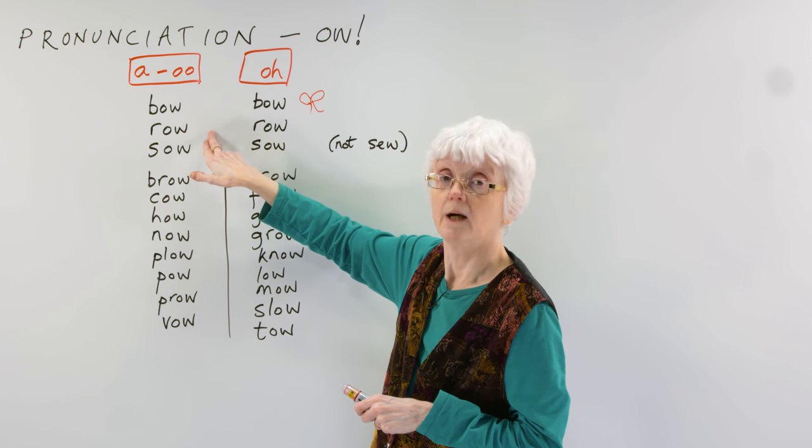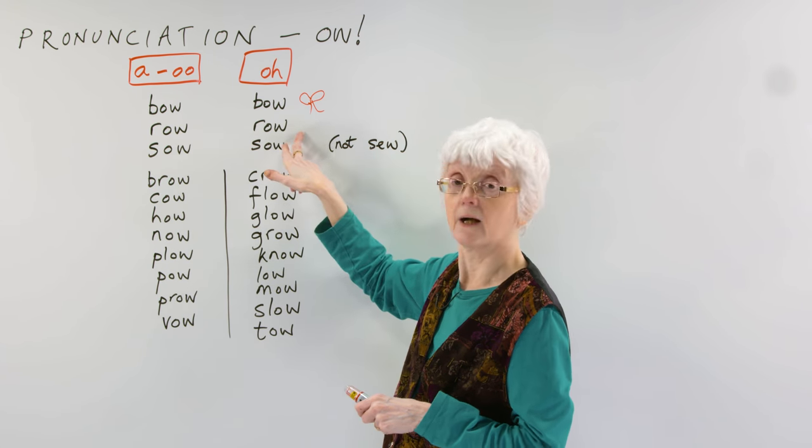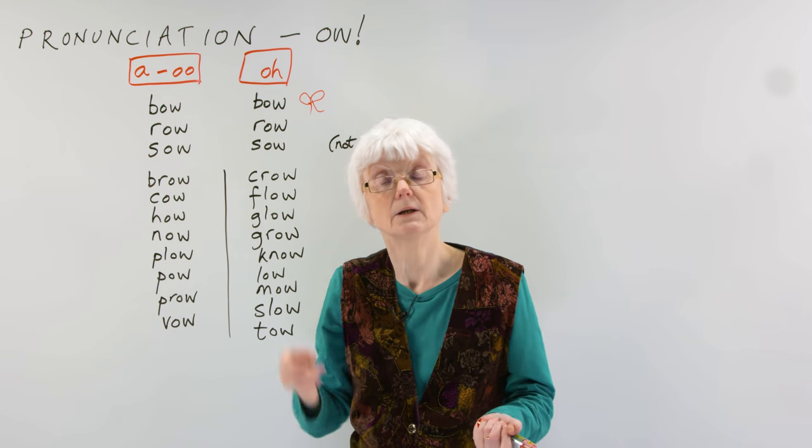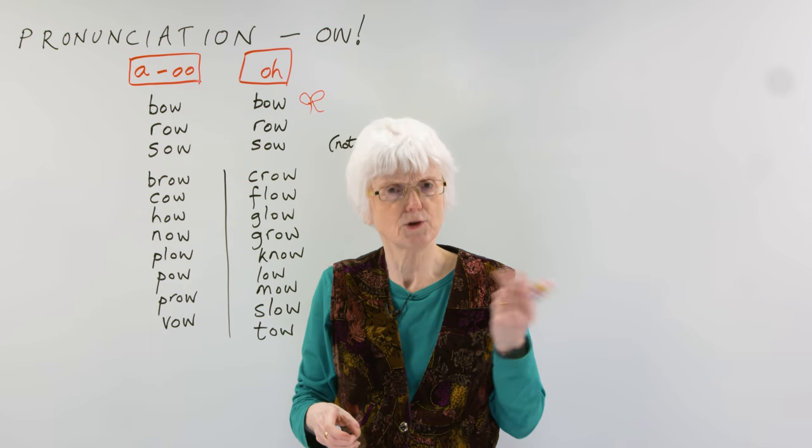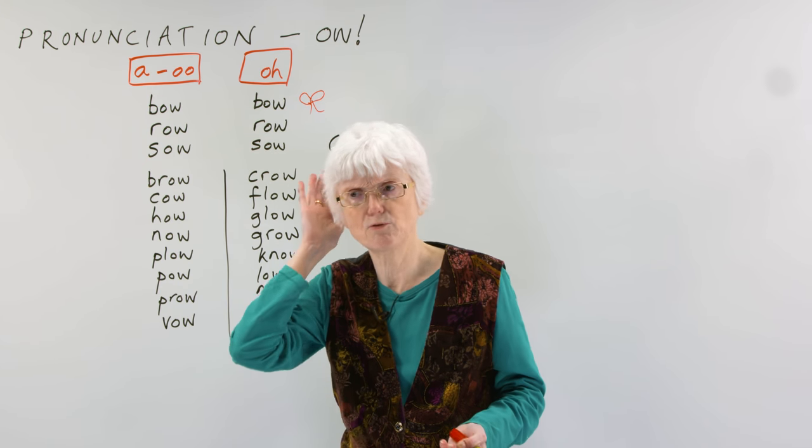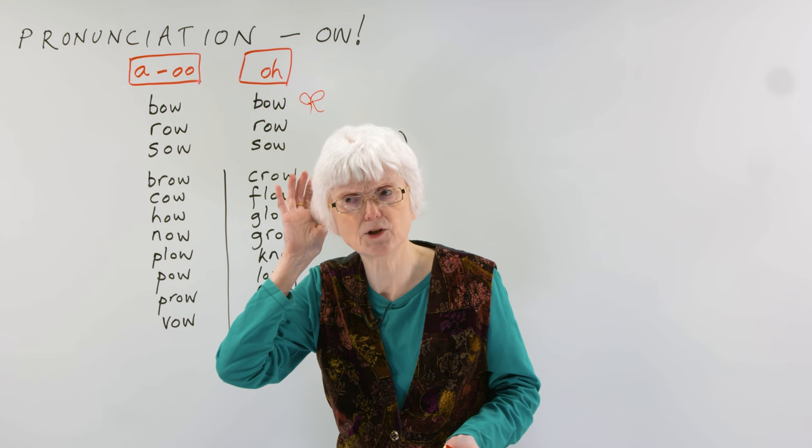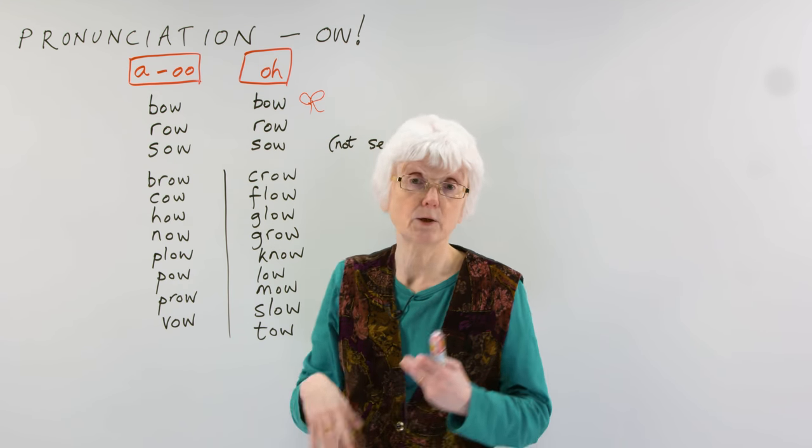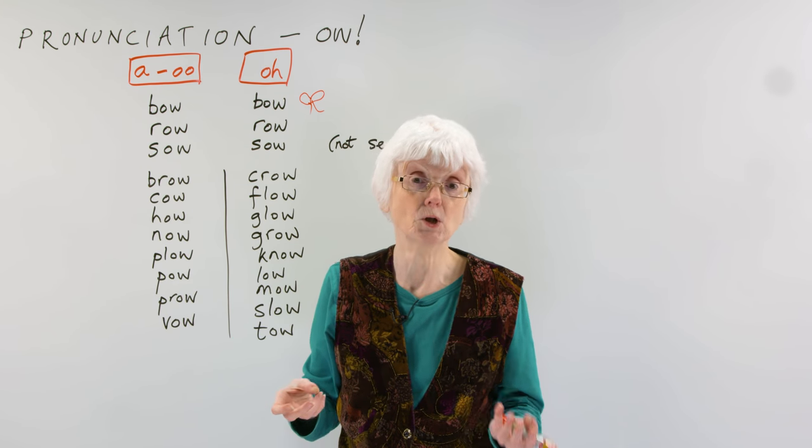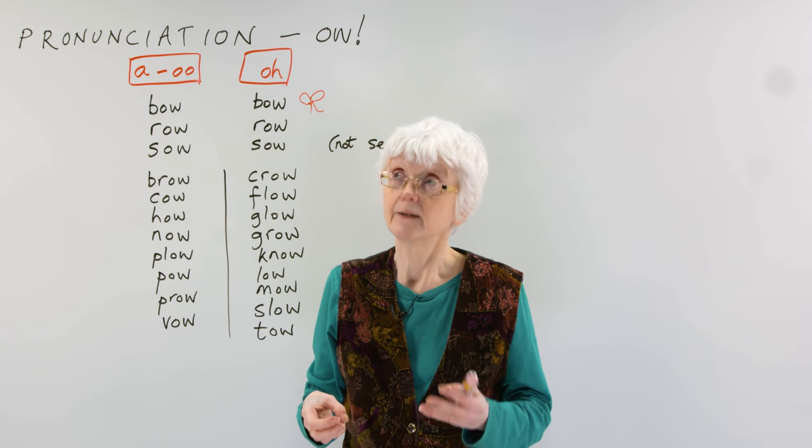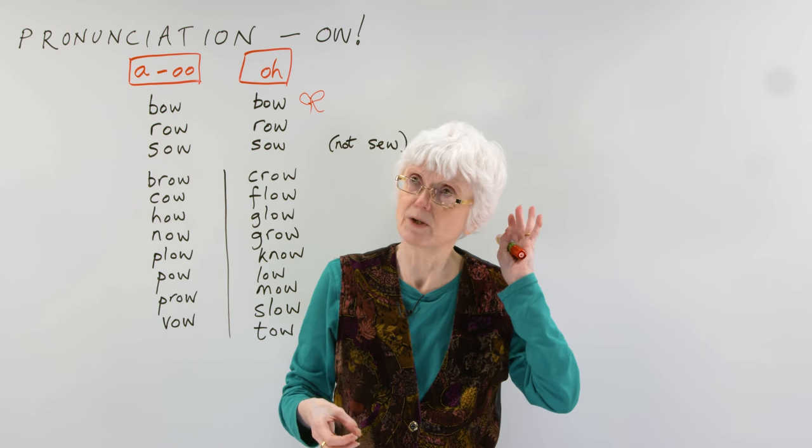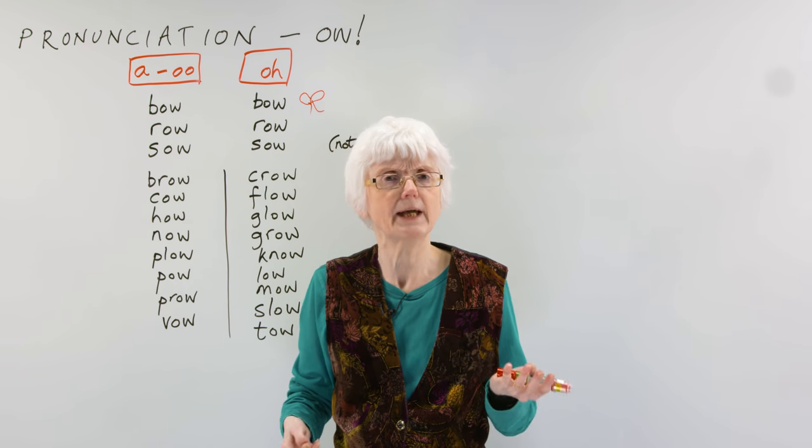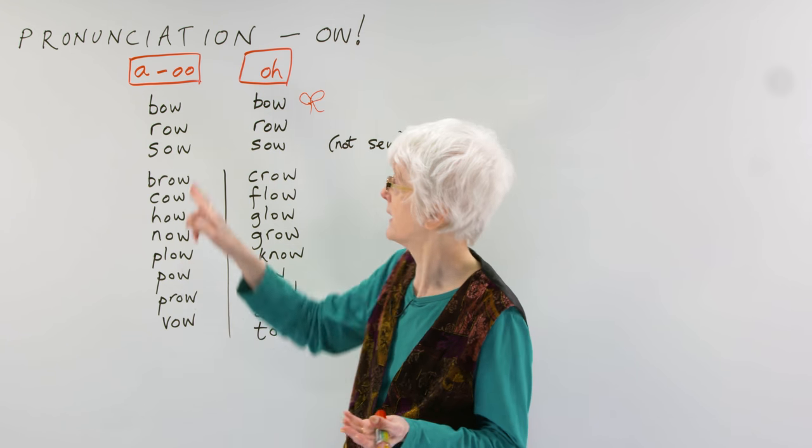Next one, row and row. A row is a lot of noise. Oh, there's a row going on out there. That's noisy. People are shouting. There's a row. It could be an argument between people. They're having a row. The neighbors next door, you can hear their voices. They're having a row. They're disagreeing about something. So that's row.